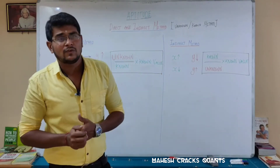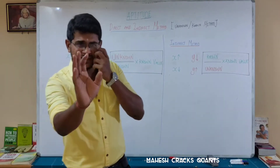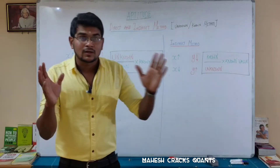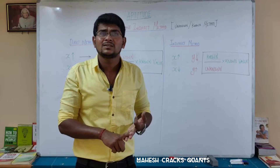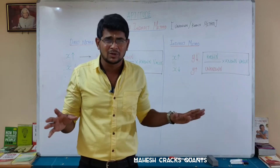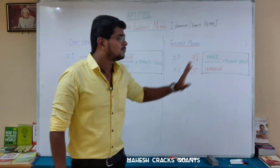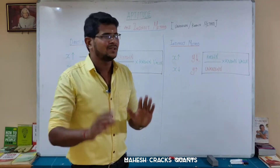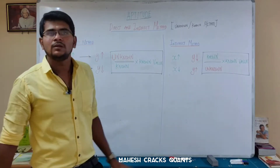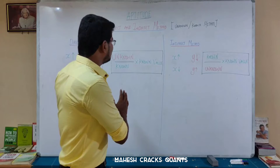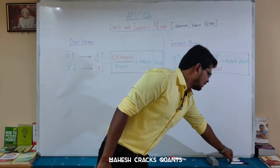For the indirect method, when x increases y decreases and vice versa. The formula is: known divided by unknown, multiplied by the known value. This method applies across topics — profit and loss, simple and compound interest, speed, time and distance. Around 20% of problems use the indirect method; the remaining 80% use direct.